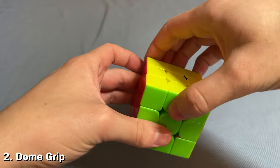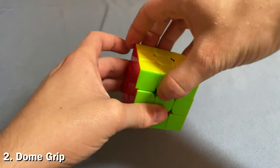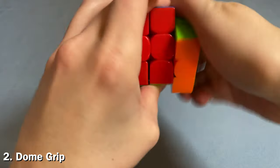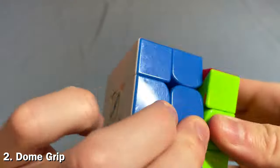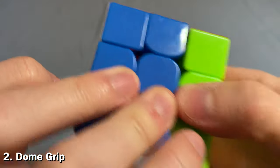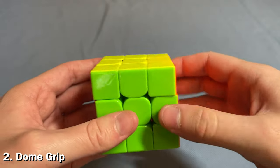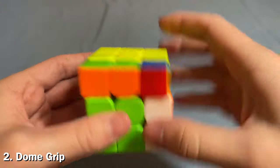Alright, so this is called dome grip. You put your hand on top of the cube like this, like a dome, and it's really good for these U2 R U2 kind of moves. You see, one hand is just completely out of the way and the other one can access the R with your pointer finger, so it's really useful for that but not too much else. This is dome grip.